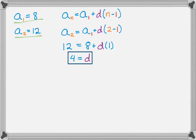Solving that, I get d = 4. Once I know d, I can go back to the formula. So aₙ = 8 + 4(n-1).